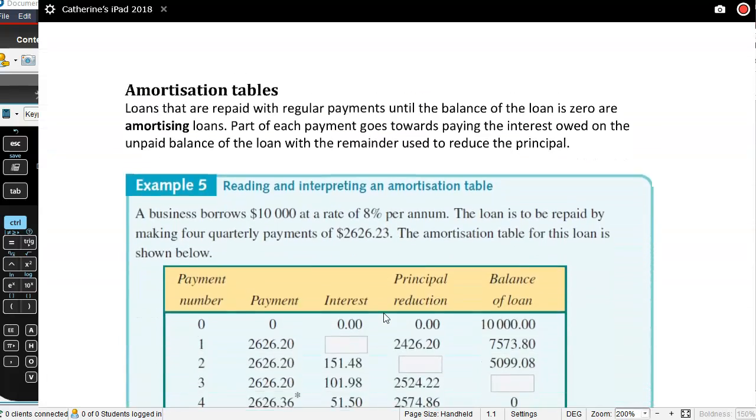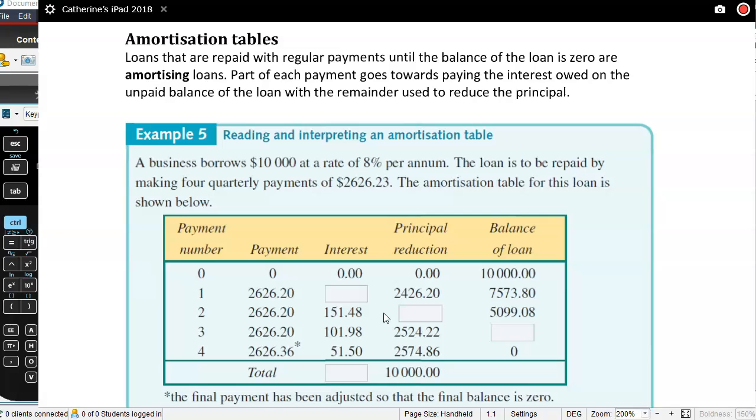Let's start thinking about amortization tables. These are tables that we use to show the life of a loan, sometimes an investment, but a lot of the times a loan until that loan is zero. It comes from the French word for death, which is mort. So it's till the death of the loan, till the end of the loan. So amortization loans until we owe zero. That's where we get the name of our table from.